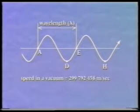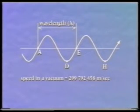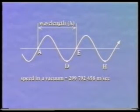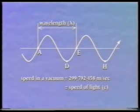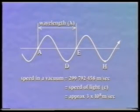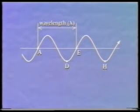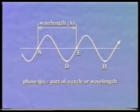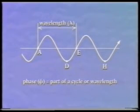For example, the speed of an electromagnetic wave in a vacuum is known at the present time as 299,792,458 meters per second, and this is commonly called the speed of light, c. This can be approximated to 3 times 10 to the 8 meters per second. One other important property which is very relevant to EDM is the phase of the wave. This is the term used to identify fractions of a cycle or wavelength and is usually represented by phi.